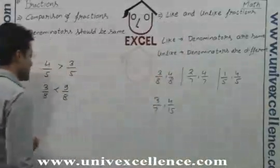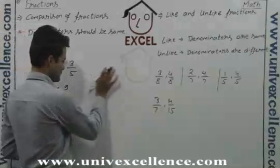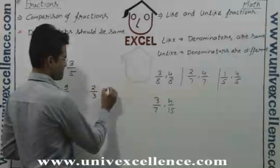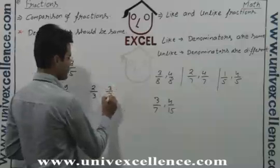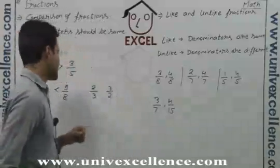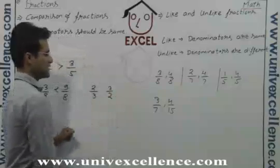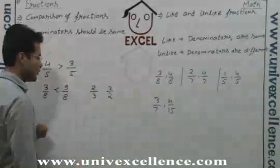But if you have a number like 2 by 3 and say 3 by 2, how will you compare? You cannot compare it before you make the denominator same. So to make the denominator same, what will we do?